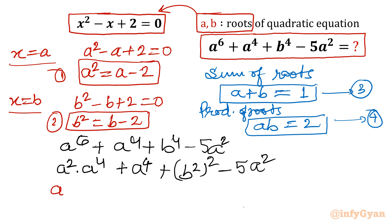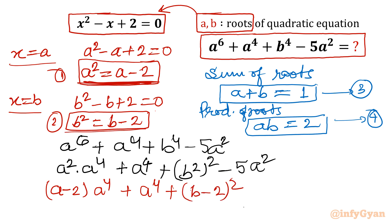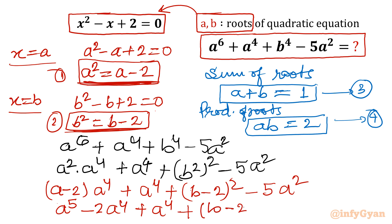Writing a² as (a minus 2) from equation 1, we get: (a minus 2) times a⁴ plus a⁴ plus (b²)². For (b²)², substituting b² equals b minus 2 from equation 2, we get (b minus 2)², then minus 5a². Expanding: a⁵ minus 2a⁴ plus a⁴ plus (b minus 2)² minus 5a². Combining the a⁴ terms gives a⁵ minus a⁴ plus (b minus 2)² minus 5a².